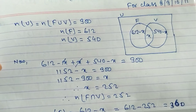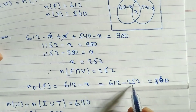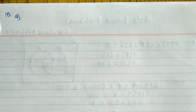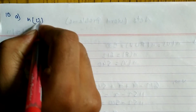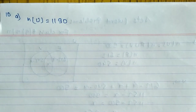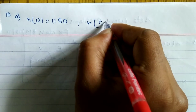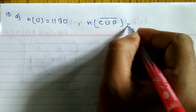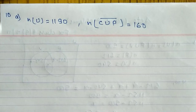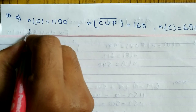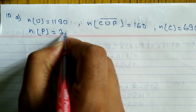Now look at question number 10. In a survey of 1190 students, N(U) equals 1190. 160 drink neither Coke nor Pepsi, so N(C union P complement) equals 160. 690 students drink Coke, so N(C) equals 690. And 390 drink Pepsi, so N(P) equals 390. We need to find Coke only, Pepsi only, and draw the diagram.